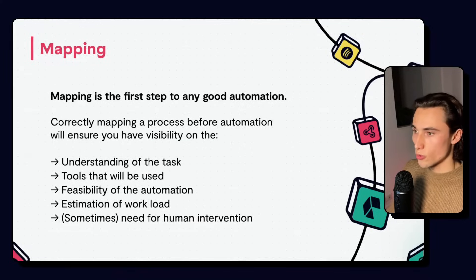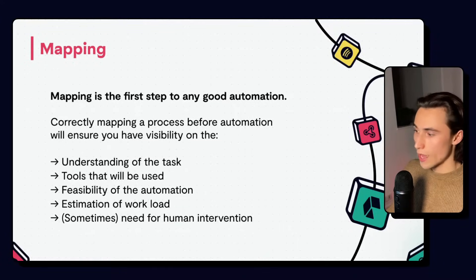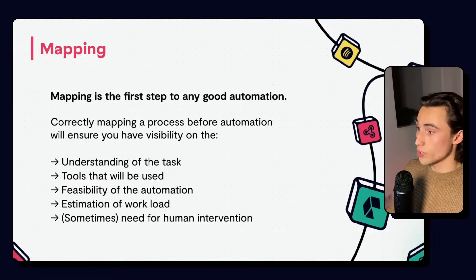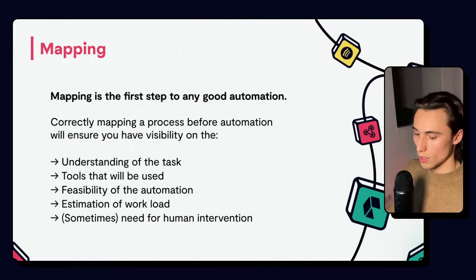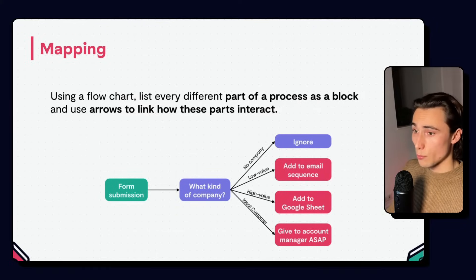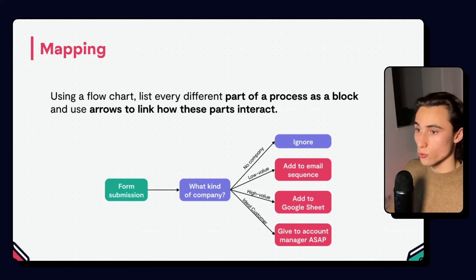Mapping out the workflow is also going to help you estimate the workload — how long is it going to take to automate this task? And finally, sometimes mapping out the workflow is going to show you where you might need some human intervention. If the task you want to automate cannot be mapped out into a predetermined set of actions, then you might need some human intervention in that workflow. In the advanced course, we cover how you can use AI to sometimes relieve the need for human intervention. So, how do you map an automation? The first thing you want to do is create a flowchart, and there are many different ways — you can use Miro, FigJam, or any other tool.